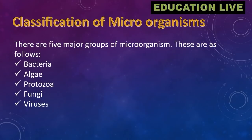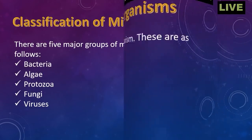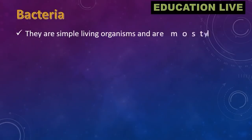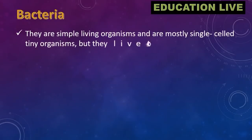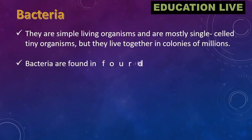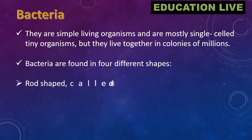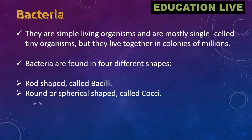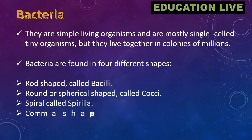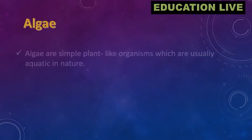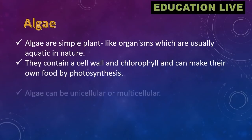Classification of microorganisms: there are five major groups — bacteria, algae, protozoa, fungi, and viruses. Bacteria are simple living organisms, mostly single-celled, but they live together in colonies of millions. Bacteria are found in four different shapes: rod-shaped called bacilli, round or spherical shaped called cocci, spiral called spirilla, and comma-shaped called vibrio.